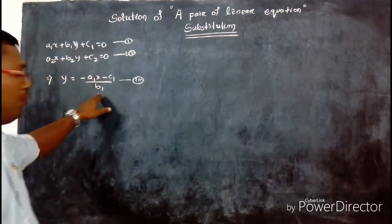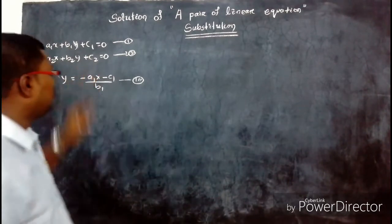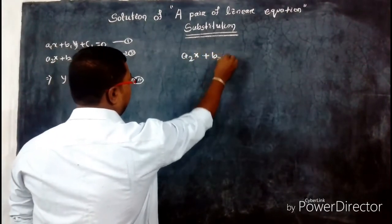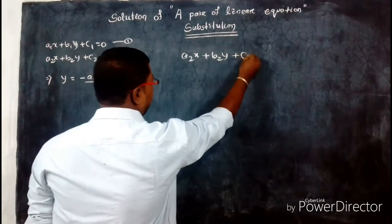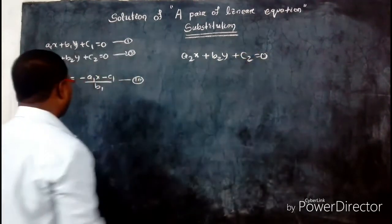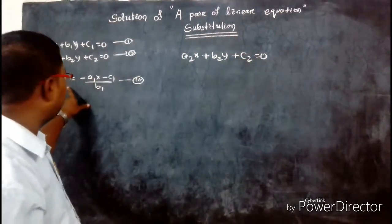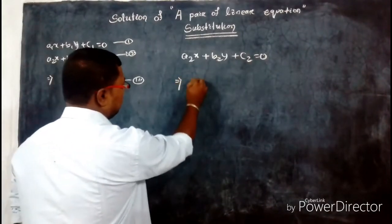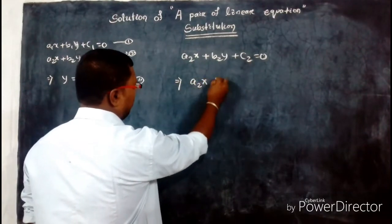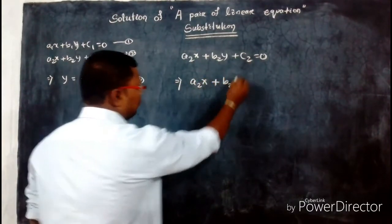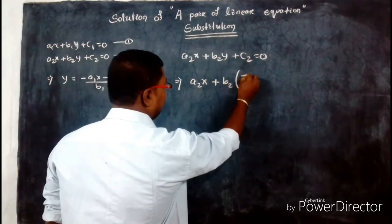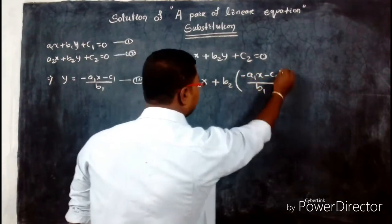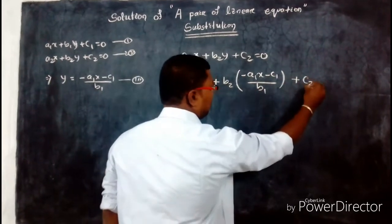Now we have to put the value of y into equation 2. Equation 2 is a2x + b2y + c2 = 0. We substitute the value of y into this equation 2, which gives us: a2x + b2 × [(-a1x - c1) / b1] + c2 = 0.